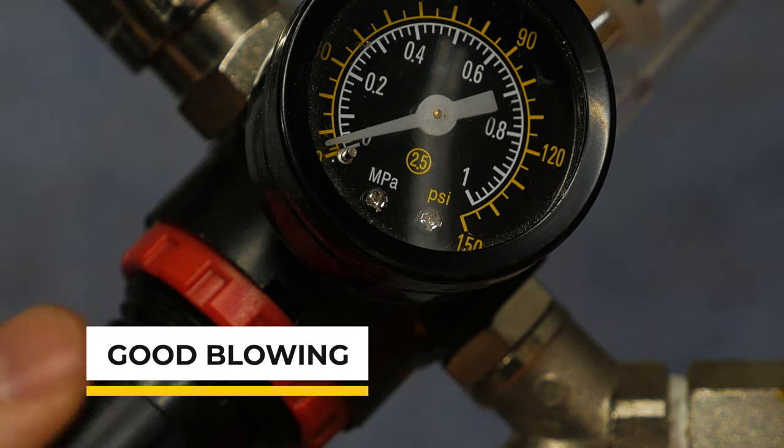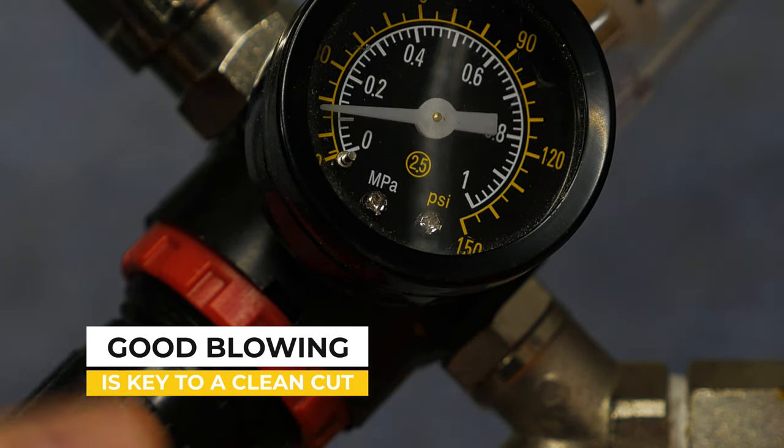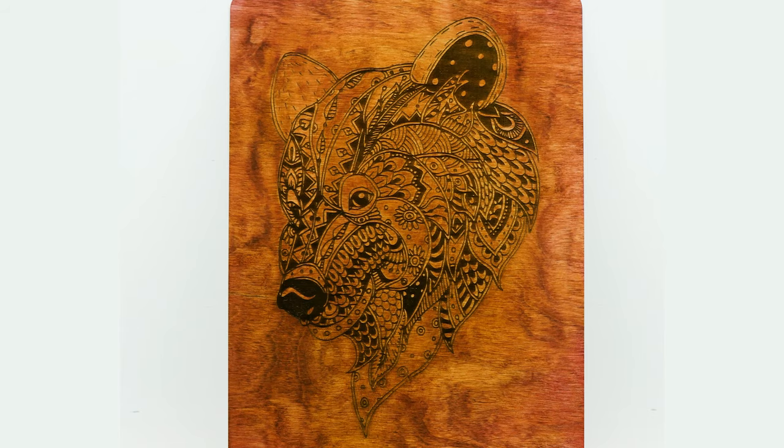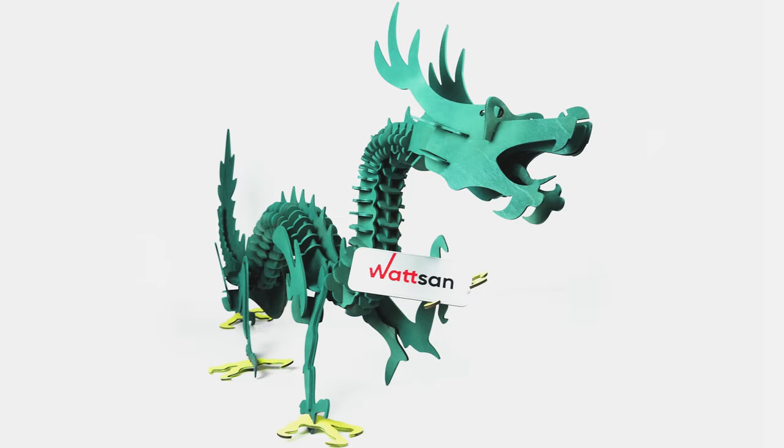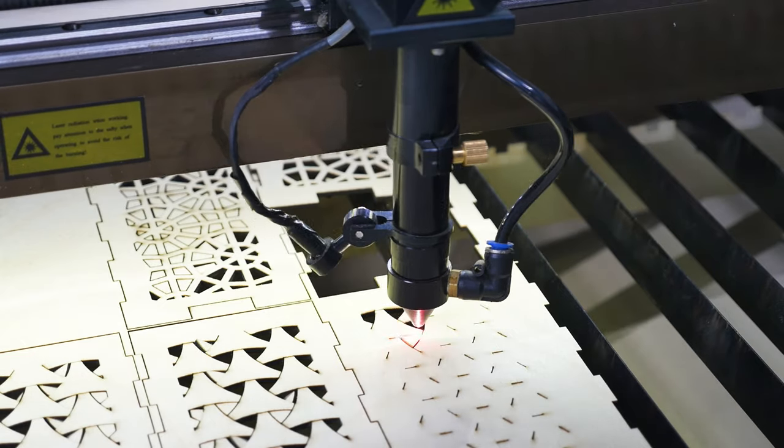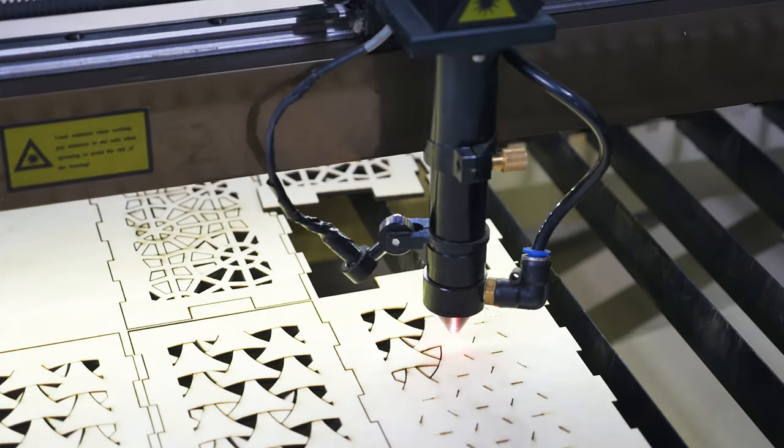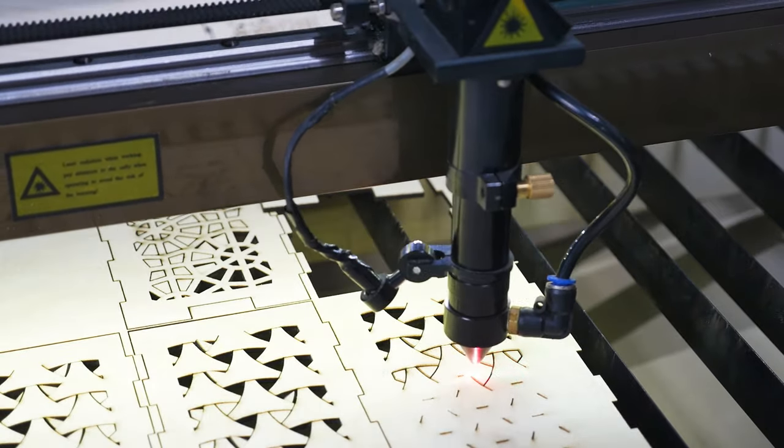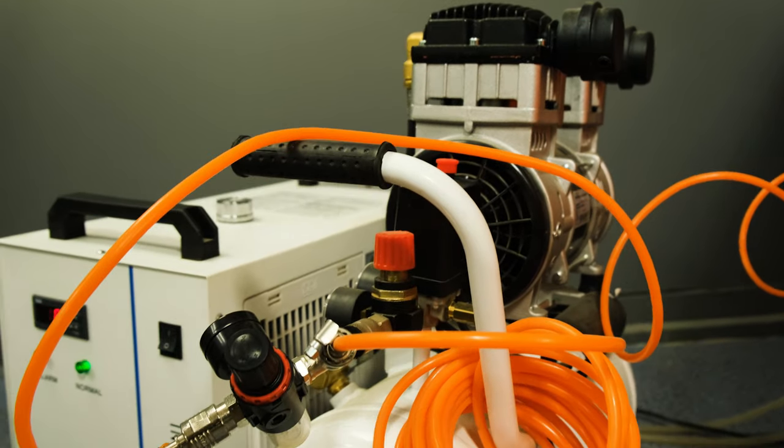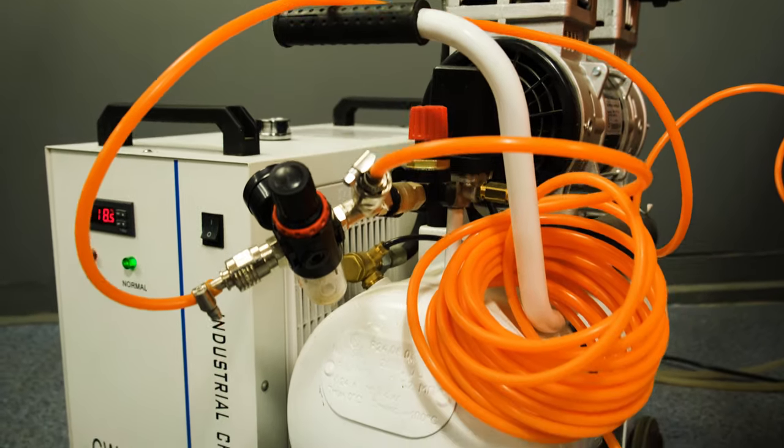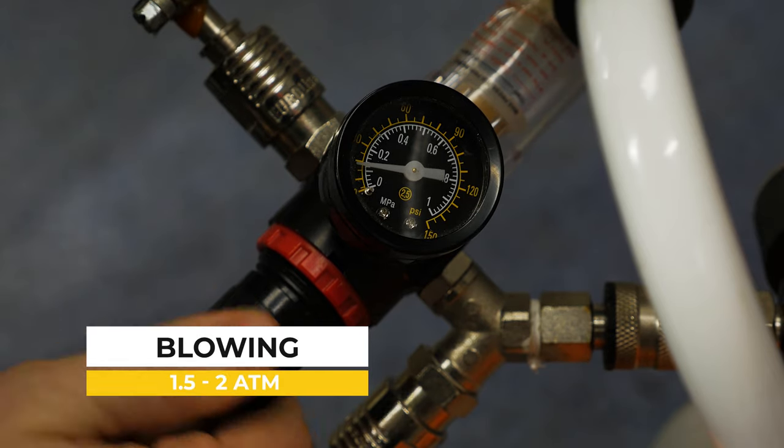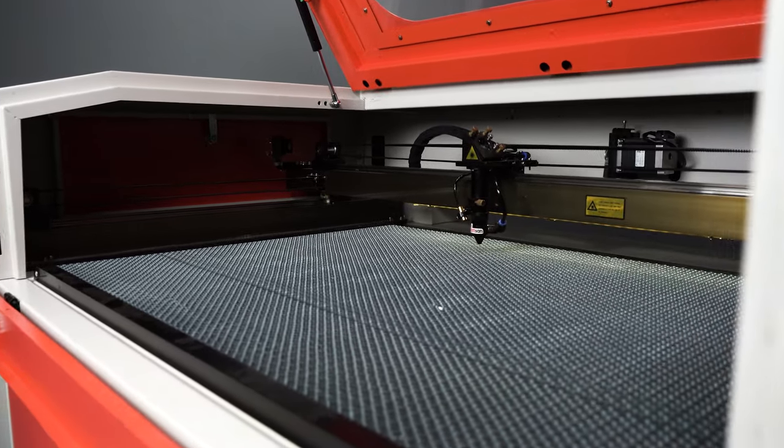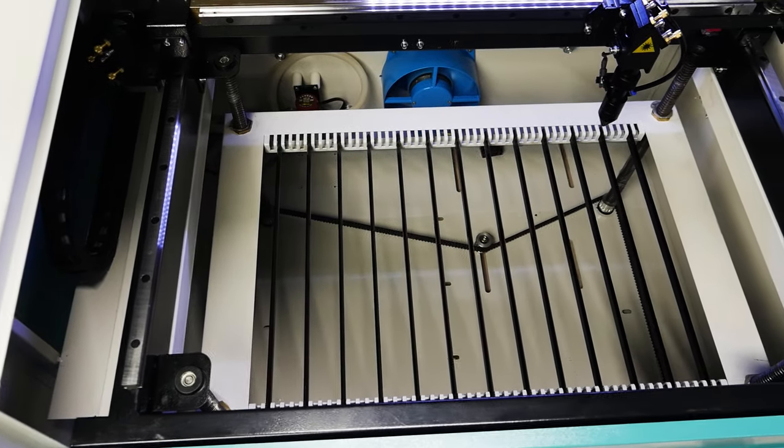The key to a clean cut is good blowing. The airstream does not only cool the lens, but also ensures accuracy and aesthetics of the final product. With good blowing, there is no soot or carbon deposits, which reduces the time required for post-processing. For good blowing, we recommend the use of a compressor. 1.5 to 2 atmospheres is sufficient. To avoid any carbon deposits on the reverse side, use clean anodized blades.